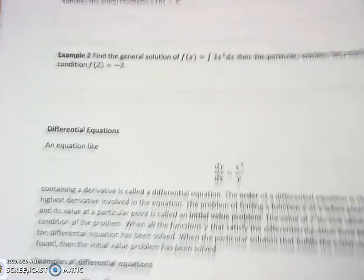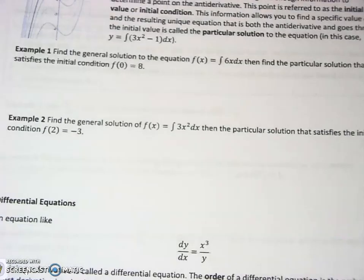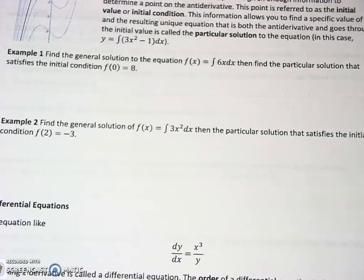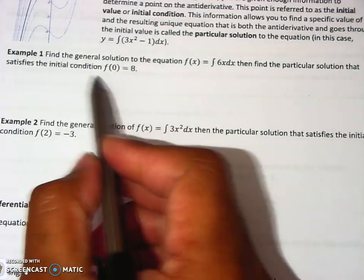So let's go to example one. And with example one here, I'm going to have it right here so that way you can see the whole thing. And then I'm going to pull it off and we're going to work. All right. So it says find the general solution to the equation f of x equals the integral of 6x dx. Then find the particular solution that satisfies the initial condition of f of 0 equals 8.